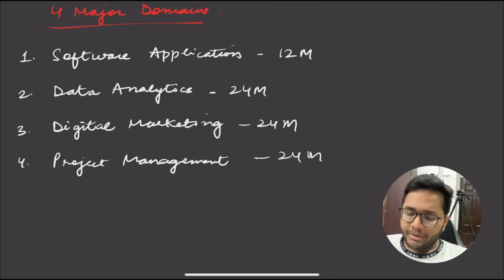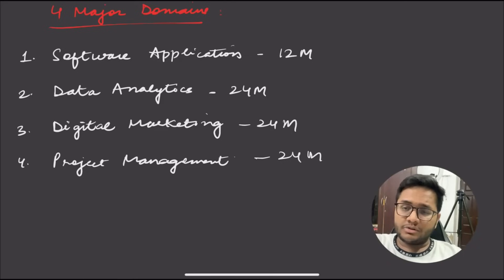This year it's open for four major domains: software application, data analytics, digital marketing, and project management. Software application means you'll be working on IT-related projects that come into Google or any other company. Data analytics is for people who are passionate about building charts and tables using tools like Power BI, Python, and SQL.